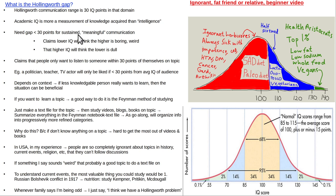So if the topic is biology, then it's the domain of biology. If it's history, then it's history. A person can be really knowledgeable in one domain — like they know a lot of history — but they might not know hardly any biology or nutrition. For example, a doctor might have a very high academic IQ on the topic of pharmacology, but a very low academic IQ on the topic of nutrition.